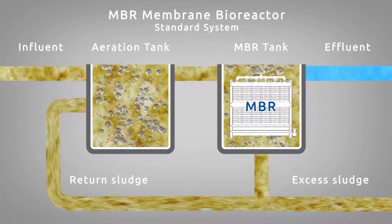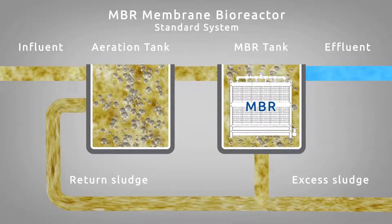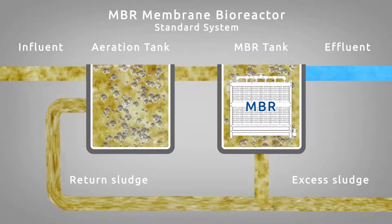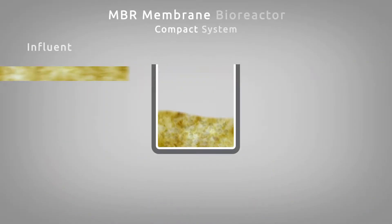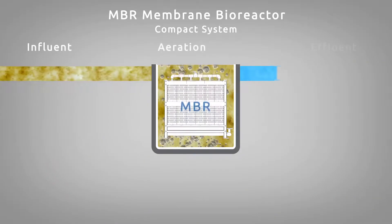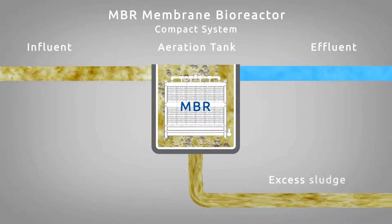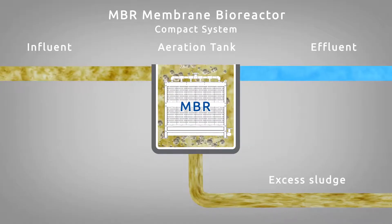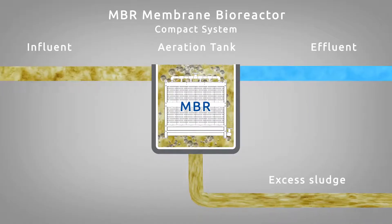The MBR modules can be put in a separated tank after the oxidation tank — this configuration is called the standard system. The MBR modules can also be put directly in the oxidation tank — this configuration is called the compact system.